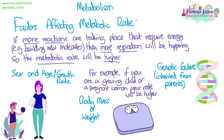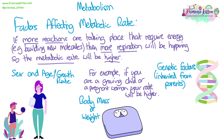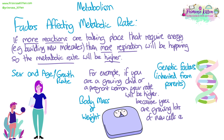For example, children or a pregnant woman will have a higher metabolic rate because they are growing. A child is building new molecules all the time to make new cells through mitosis, and similarly a pregnant woman is growing a new child, so lots of new cells and molecules are being built. This requires more energy, and therefore the metabolic rate will be higher.